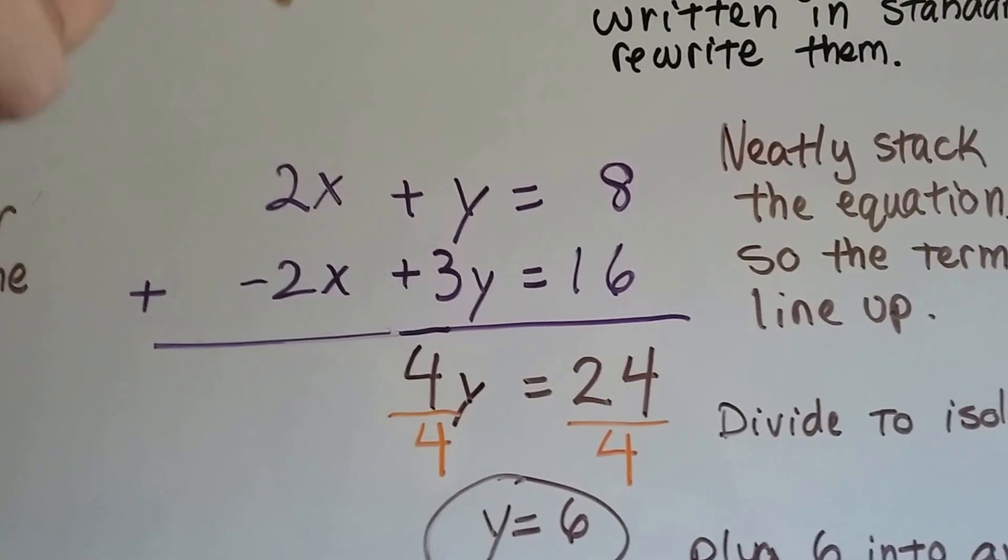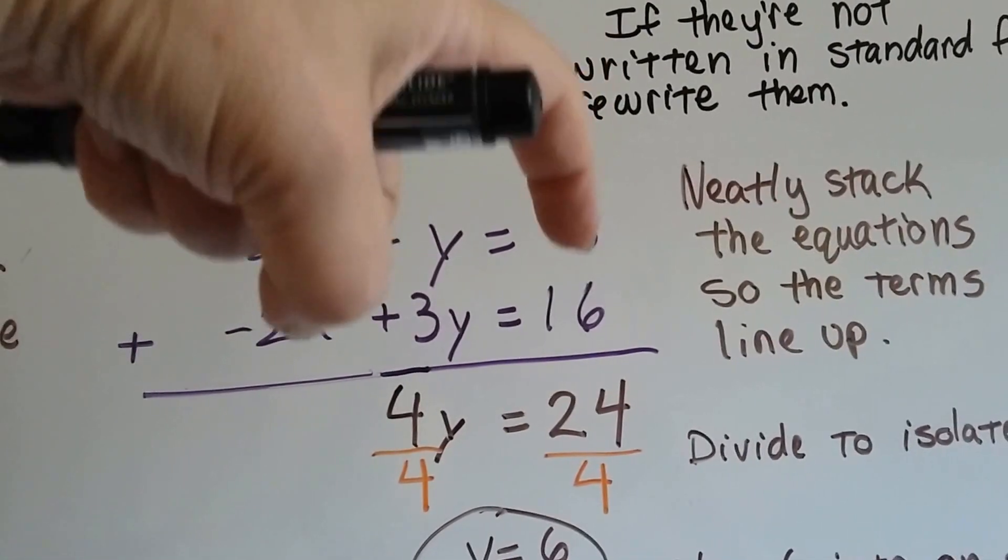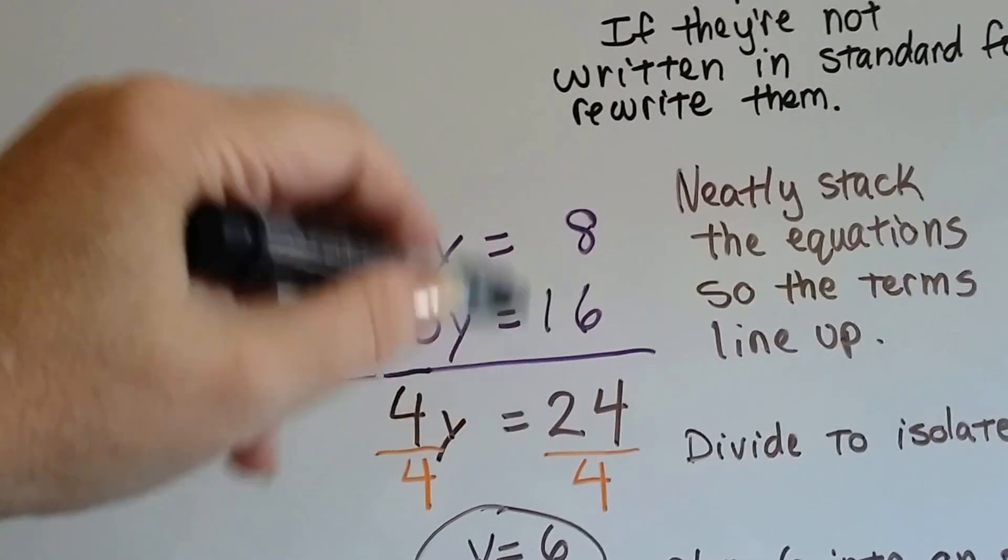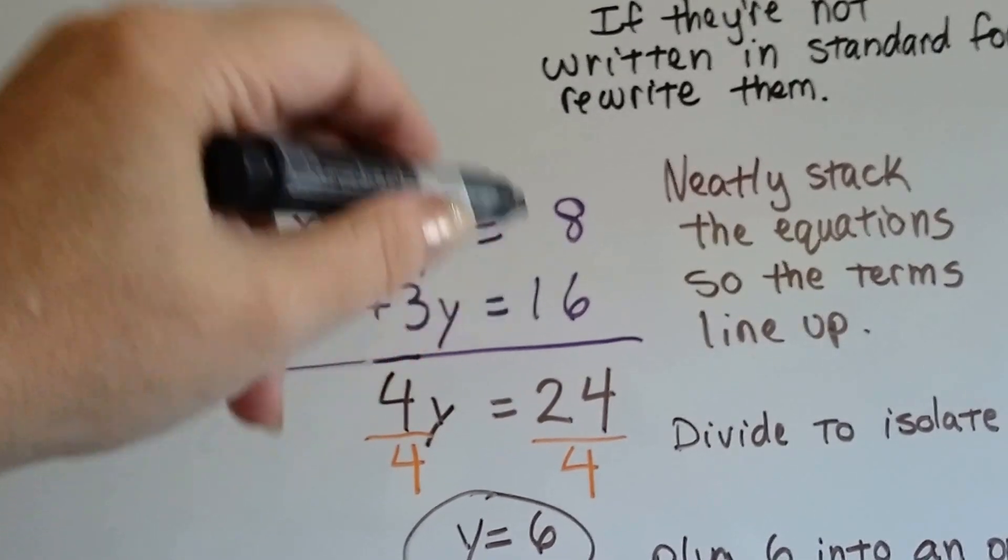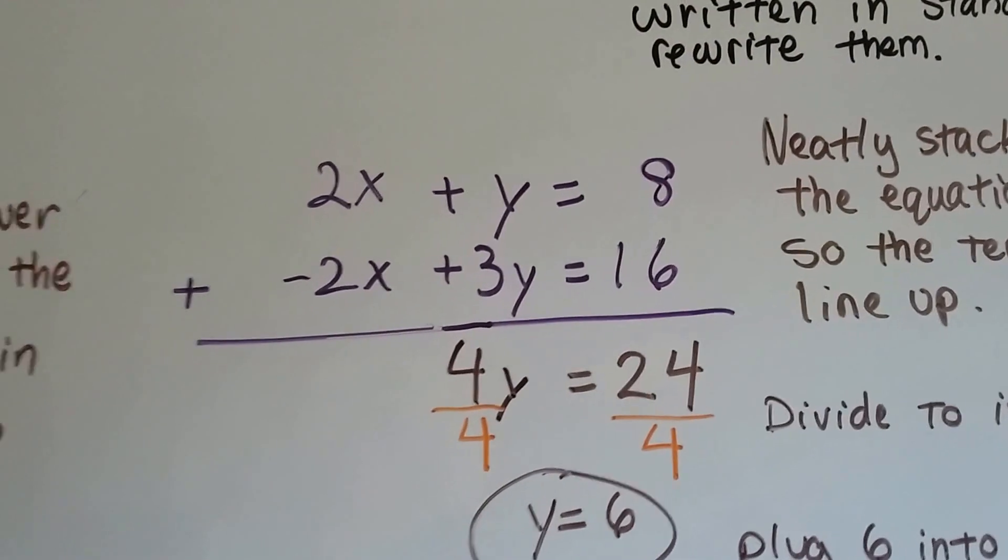So we've neatly stacked them so the terms line up. We've got our x terms here, our y terms, and we've got our constants lined up. Make sure that the ones are in the ones place and the tens are in the tens place. You would hate to accidentally add the 8 to this 1 10 and get 96 by mistake. So make sure they're lined up nice.